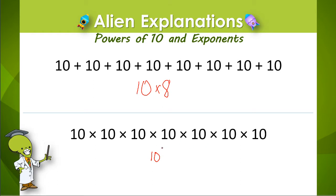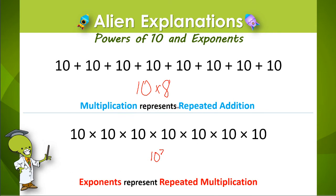This is where we use exponents. So we can use the exponent 7 to represent this long multiplication expression. So 10 to the 7th power is a much shorter way to represent this long repeated multiplication problem. So remember, multiplication represents repeated addition, and exponents represent repeated multiplication.